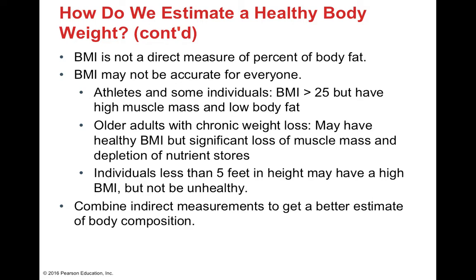BMI is not a direct measure of body fat and is not accurate for everyone. For athletes, it might appear incorrect — they may have a BMI over 25 with high muscle mass and low body fat, appearing overweight when they are actually extremely fit. Older adults with chronic weight loss might appear to have a healthy BMI but have significant muscle mass loss and depleted nutrient stores. Individuals under 5 feet tall tend to get skewed results. We want to take multiple measurements and combine them to get a really good estimate of an individual's body composition.